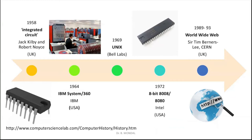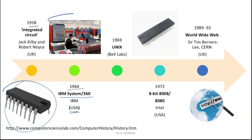In 1958, the integrated circuit was developed by Jack Kilby and Robert Noyce. This integrated circuit was going to play a huge role in developing smaller computers. Then in 1964, IBM System 360 was developed by IBM — the computers were so large at that time that you wouldn't know whether the operator was sitting inside the computer or in front of it.